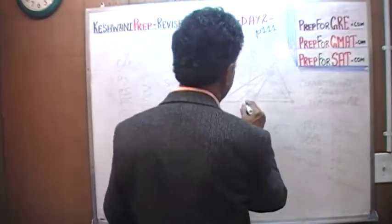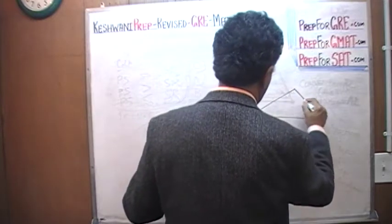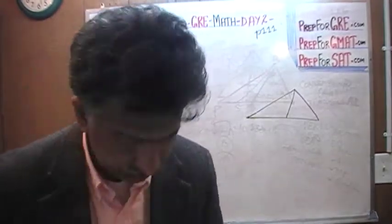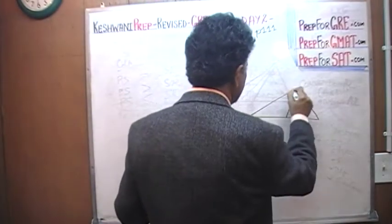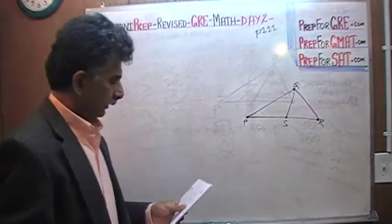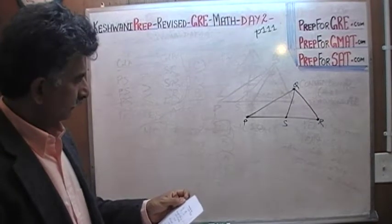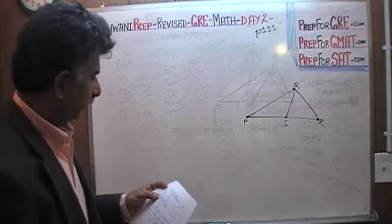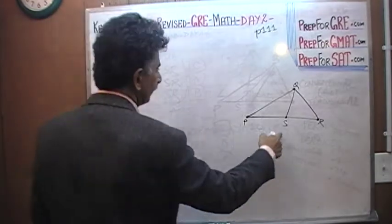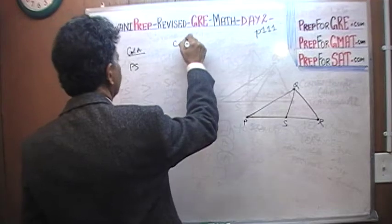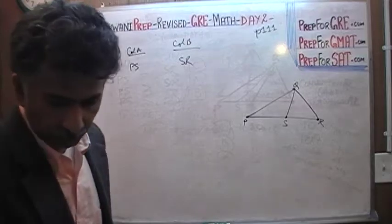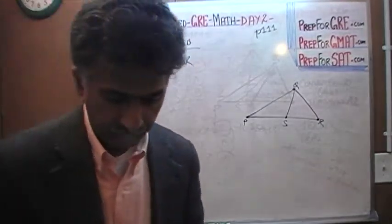Let's turn to page 111. We are given a picture that looks something like this: P, Q, R, and then S. We are asked to compare the length of P to S versus the length of S to R. Before I actually start solving the problem, allow me to digress for a little bit.